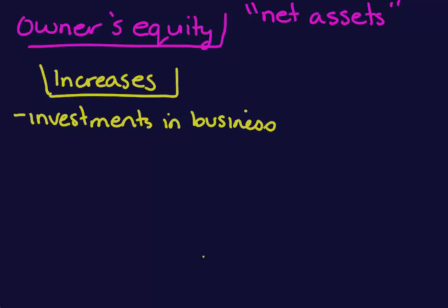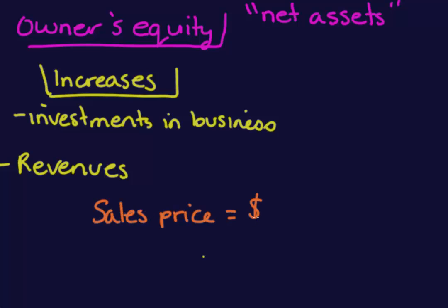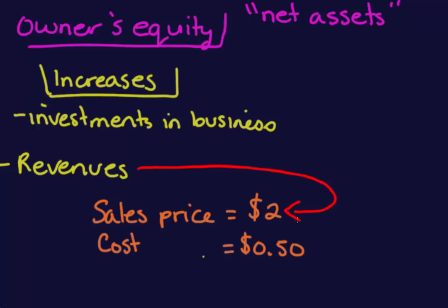The other item that increases owner's equity is revenues. Revenues come about when you sell a product. For example, if our company makes pens and sells them for $2, and the cost to make the pen is 50 cents, the revenue is the sales price of $2. Revenues can also come from a service organization — for example, an accounting firm that bills clients at $250 per hour would recognize that $250 per hour as revenue.